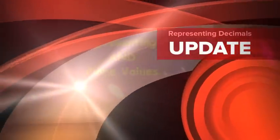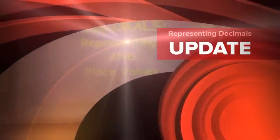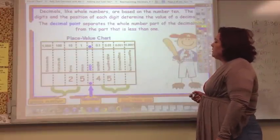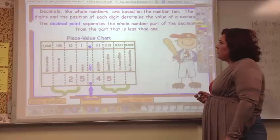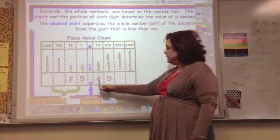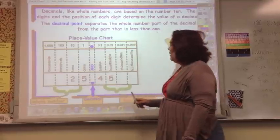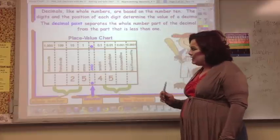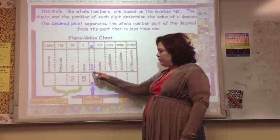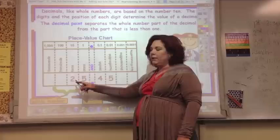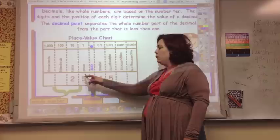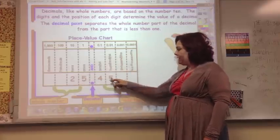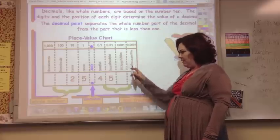So, decimals. We're going to be representing and talking about place value. Decimals, like whole numbers, are based in the number 10. The digits and the position of the digits determine the value of the decimal. The decimal point separates the whole number from the part of the number that is less than 1. We say decimals using 'and' for the decimal point — so not 25.45, but '25 and 45 hundredths.' We always go with the last place value and use that place value's name.